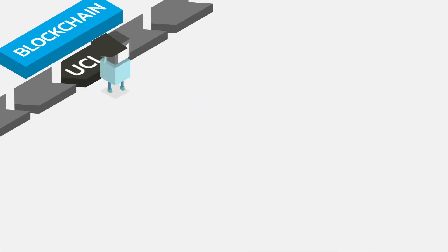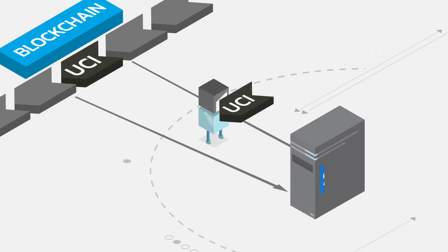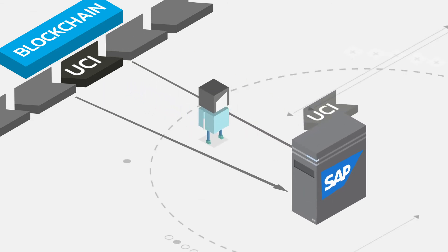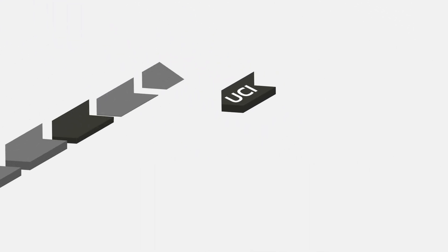The Unibright Connector integrates existing IT system landscapes into the blockchain world, connecting them to smart contracts by automatically generated smart adapters. The Unibright Connector also enables cross-blockchain integration.